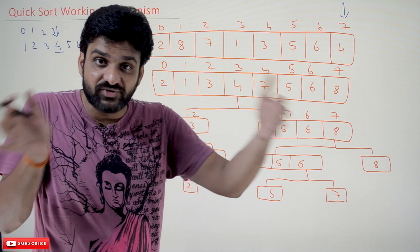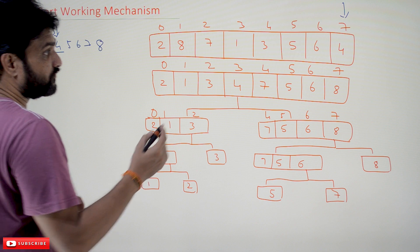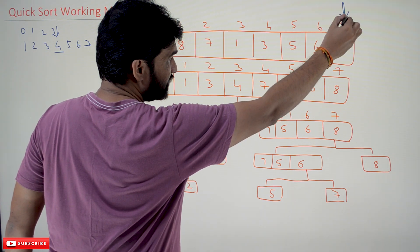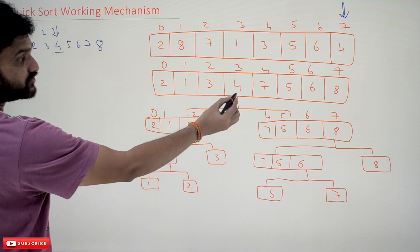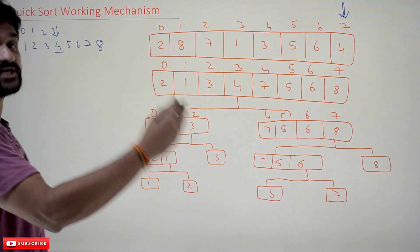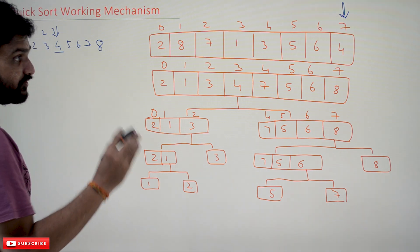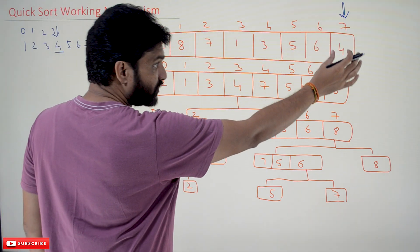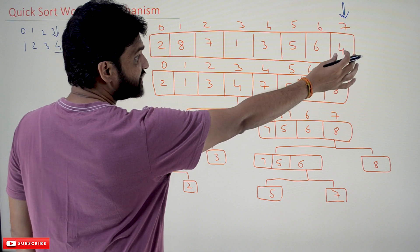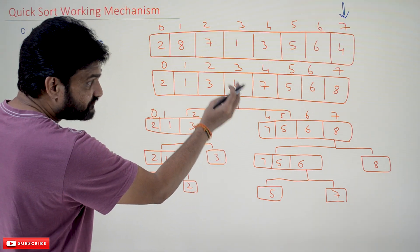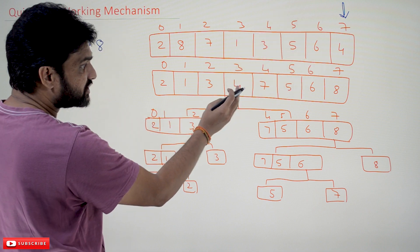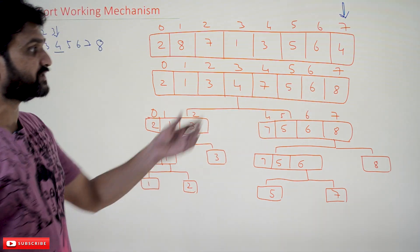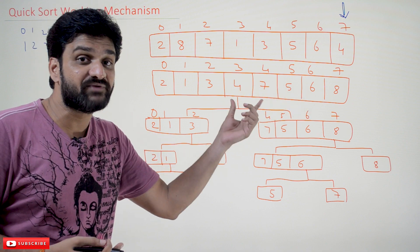Every time we call the partition algorithm, the array gets divided based on the partition element. Applying partition on the array with this element as the pivot will convert the array into a new form. The partition algorithm is applied on the array considering the last element as pivot, that element is arranged in its position, elements to the left are smaller than or equal to the pivot, and elements to the right are greater than or equal to the pivot.